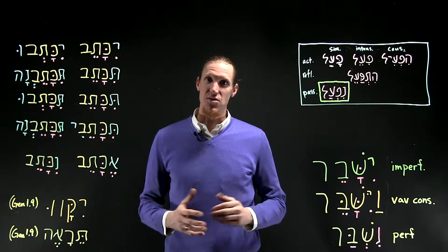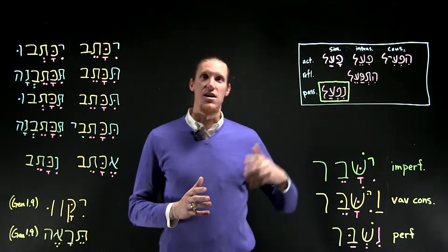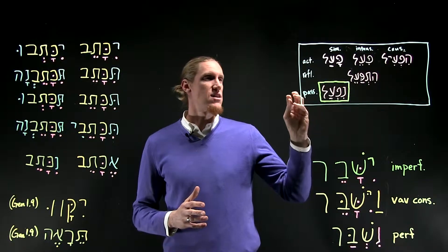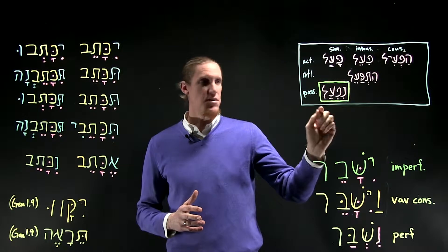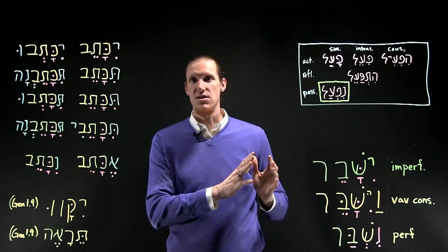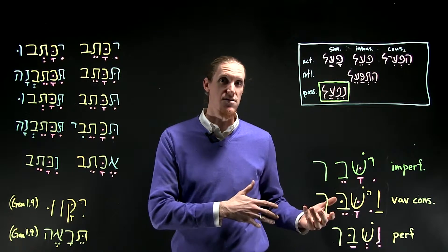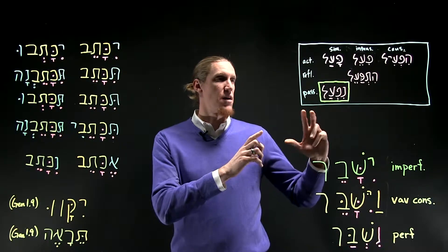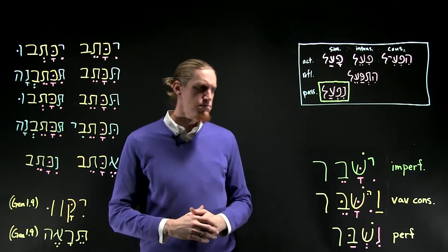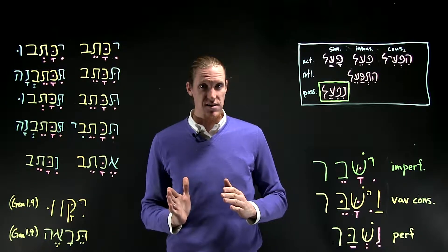This video is on the Niph'al imperfect. You'll remember from our verb stem chart that the Niph'al is in the simple column, passive row — so generally the Niph'al has simple action that is describing, and it does so most often in the passive voice, which is the passivization of the Qal, most generally, though not all the time.